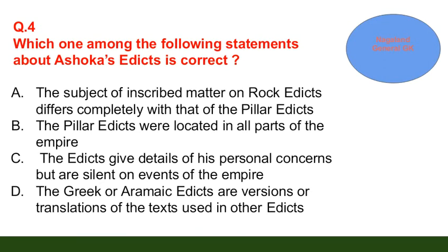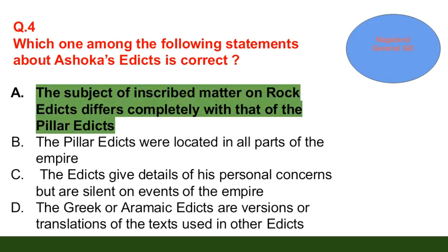Question number 4: Which one among the following statements about Ashoka's edicts is correct? Option A: the subject of inscribed matter on rock edicts differs completely with that of the pillar edicts; option B: the pillar edicts were located in all parts of the empire; option C: the edicts give details of his personal concerns but are silent on events of the empire; option D: the Greek or Arabic edicts are original translations. The correct answer is option A.